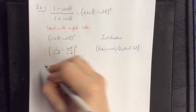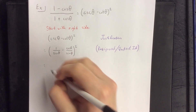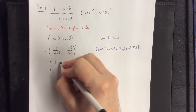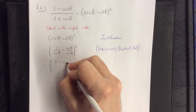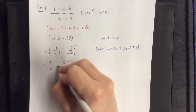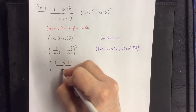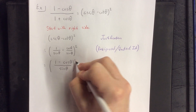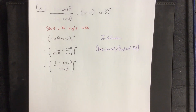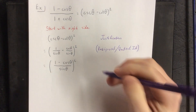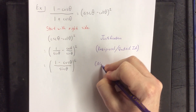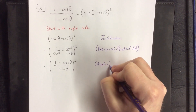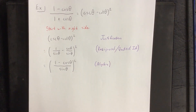Because we have two fractions being subtracted that already have a common denominator, we can combine them into 1 minus the cosine of theta, all over the sine of theta, quantity squared. That is technically a step of algebra — combining two rational expressions into one rational expression.